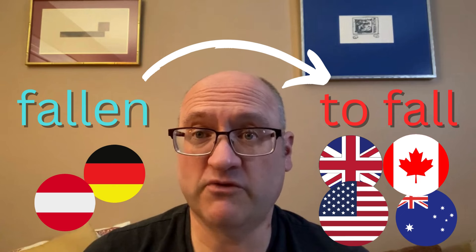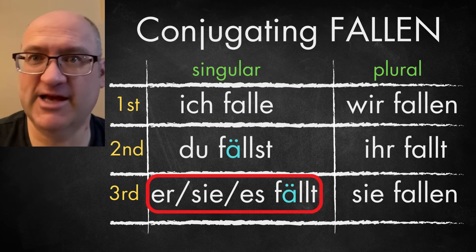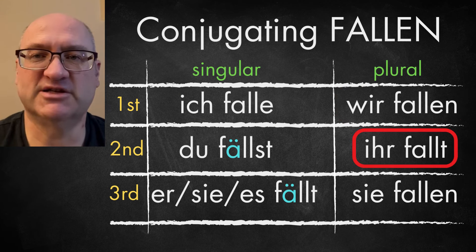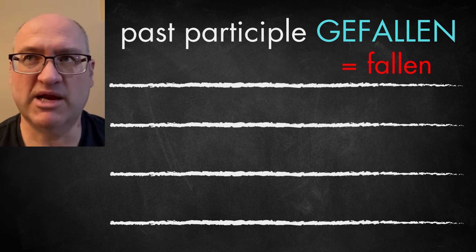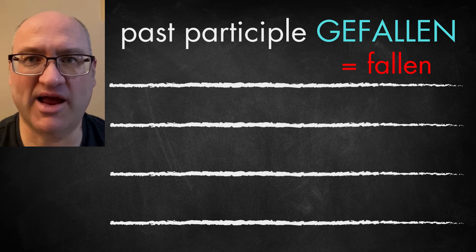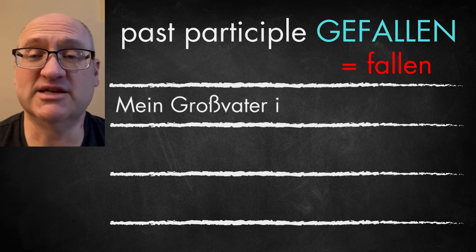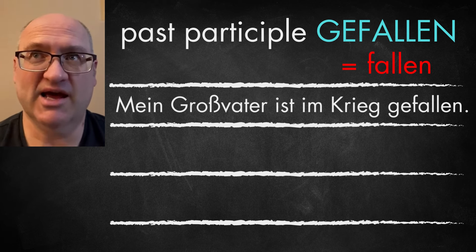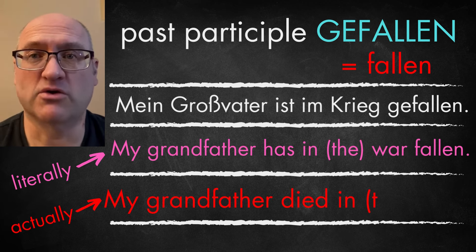So first let's talk about the verb 'fallen,' which is almost synonymous with the English verb 'to fall' — basically to fall, to stumble. The present tense conjugation: ich falle, du fällst, er/sie/es fällt, wir fallen, ihr fällt, und sie fallen. The past participle is 'gefallen,' and one meaning that German has that English does not is that it can also refer to people dying in war. For instance, 'mein Großvater ist im Krieg gefallen' literally translates as 'my grandfather has fallen in war,' but it really means my grandfather died in war.